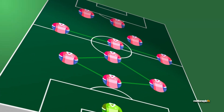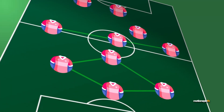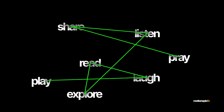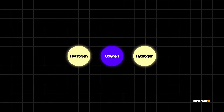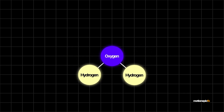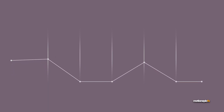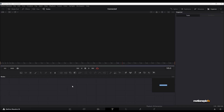Hey guys, welcome back. In this video we are going to do something which is very common in motion graphics: creating that connected line animation. It's actually pretty simple. Here are some of the examples that I made, and I'm going to show you how you can create this using a very simple example. Then it's up to you how complex you want to make it.